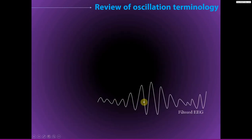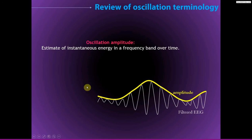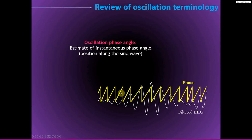Just to show this information another way, here we have a filtered EEG time series. Here is the oscillation amplitude, and we would square this yellow line to get the power. And here is the phase angle time series. This is really spiraling around on a polar plot, and it looks like it's discretized here — that's just when it goes from 2π to 0.